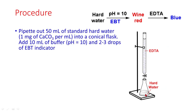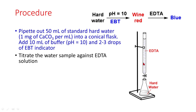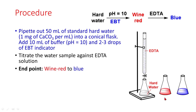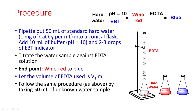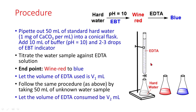Procedure: Pipette out 50 ml of standard hard water into a conical flask. Add 10 ml of buffer and 2–3 drops of EBT indicator. Titrate the water sample against EDTA. The end point is wine red to blue. Let the volume of EDTA used be V1. Follow the same procedure by taking 50 ml of an unknown water sample. Let the volume of EDTA consumed be V2 ml. In this way, the total hardness of the sample is obtained.